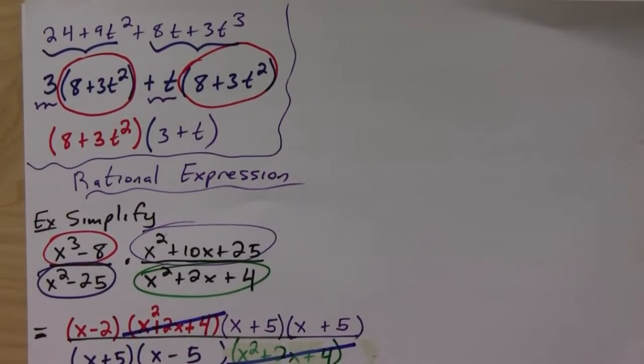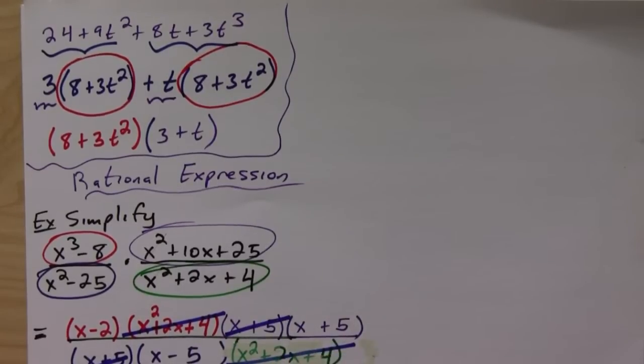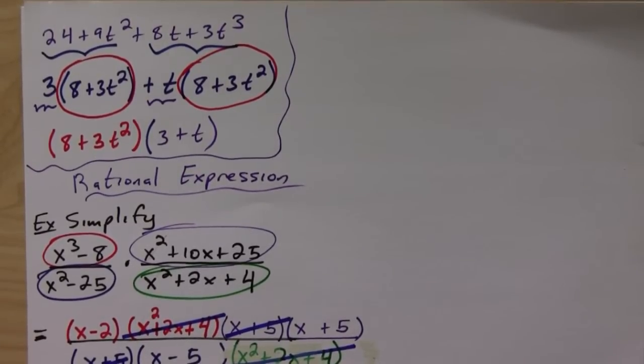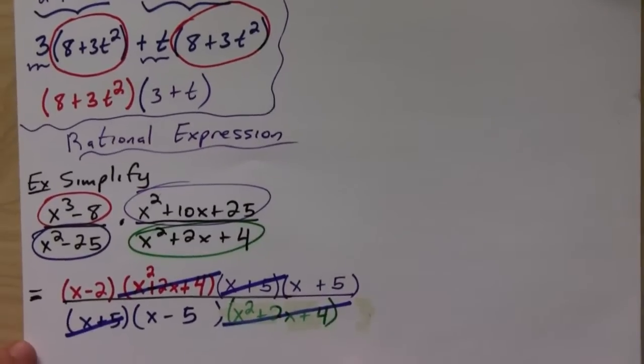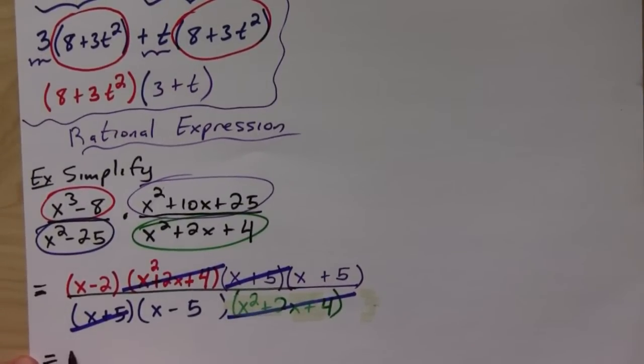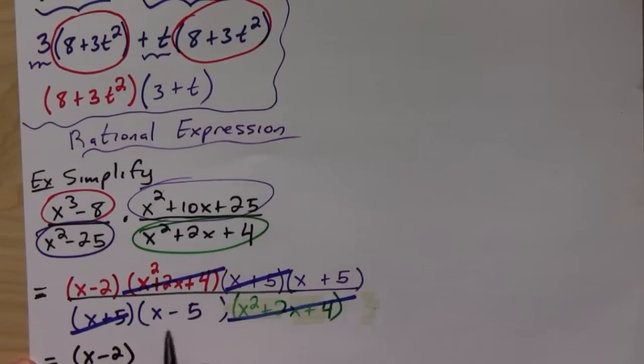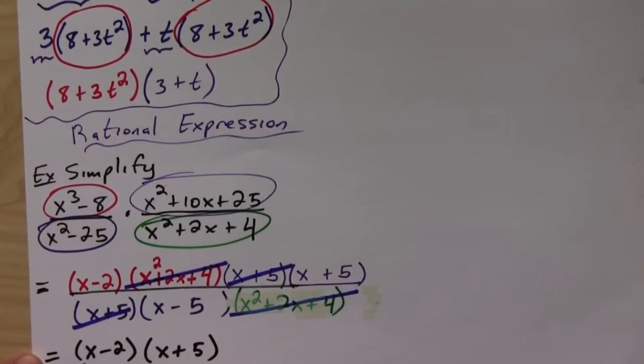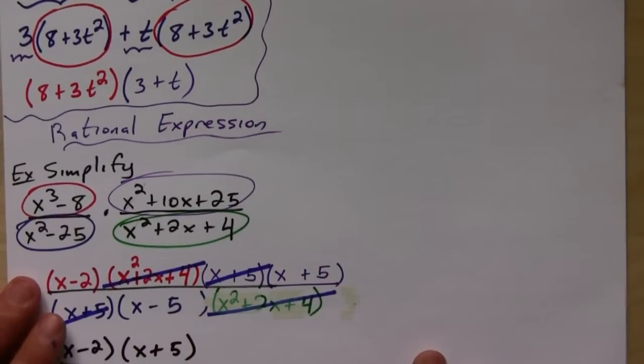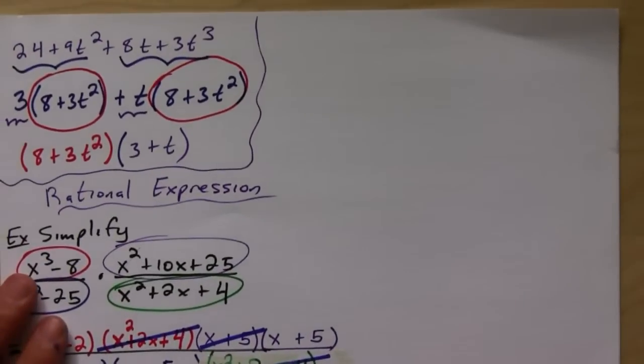And so this is the fun part. The x plus 5's cancel, and so we're just left with x minus 2 on the top, x plus 5 over x minus 5. That's it.